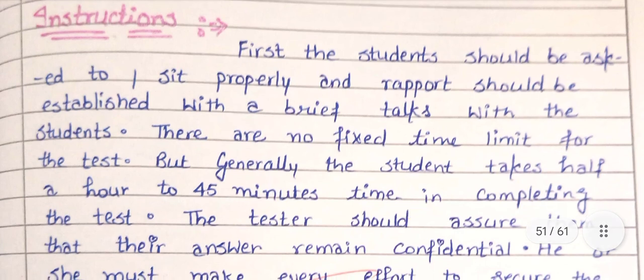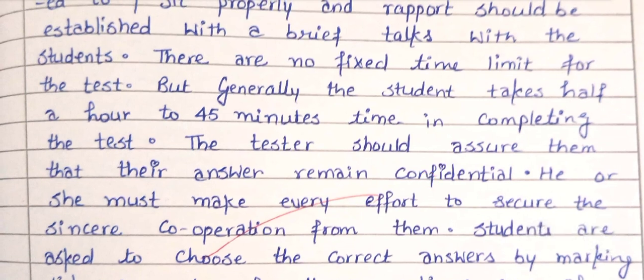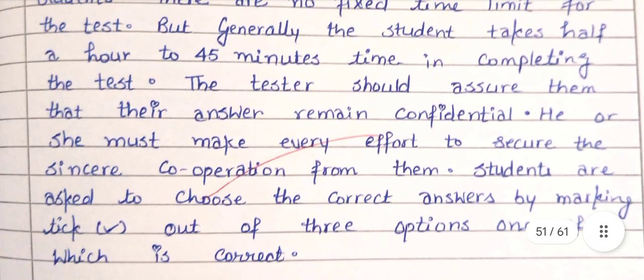Now, introduction. First, students should be asked to sit properly and rapport should be established with brief talks with the students. There are no fixed time limits for the test, but generally the student takes half an hour to 45 minutes to complete the test. The testers should assure them that their answers remain confidential. He or she must take every effort to secure sincere cooperation from them. Students are asked to choose the correct answers by marking a tick out of three options, one of which is correct.